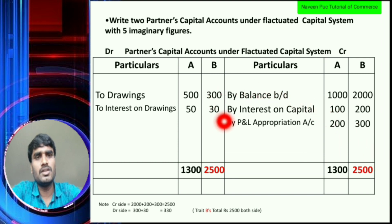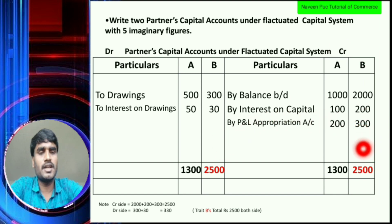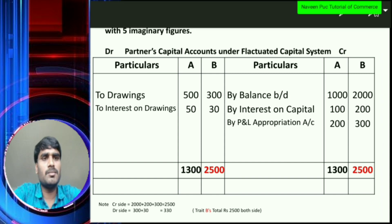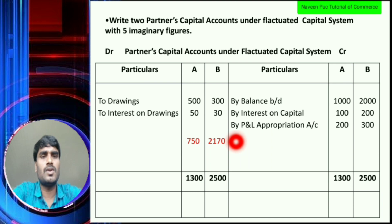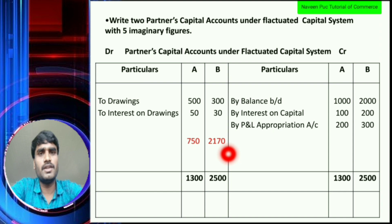So the credit side total is Rs. 2,500. The debit side is Rs. 300 plus Rs. 30 equals Rs. 330. The credit side is Rs. 2,500 and the other side is treated accordingly. The difference amount is Rs. 2,000.